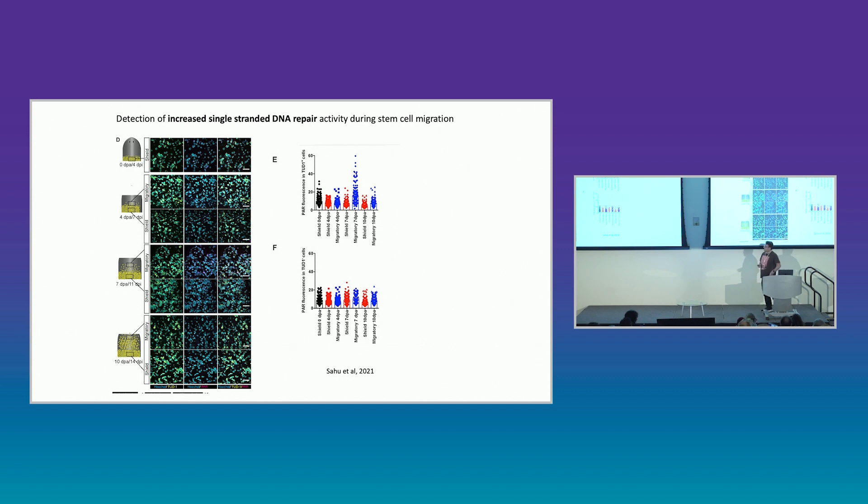If we look at acute damage with poly-ADP ribose, we can see that as cells are at their migratory maximum, they have increased levels of acute damage, not at other times. And of course, the non-stem cells don't have this because they're not receiving any damage because they're not migrating. So this suggested there was increased genome instability in migrating cells.